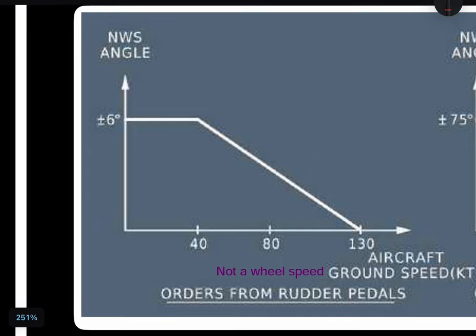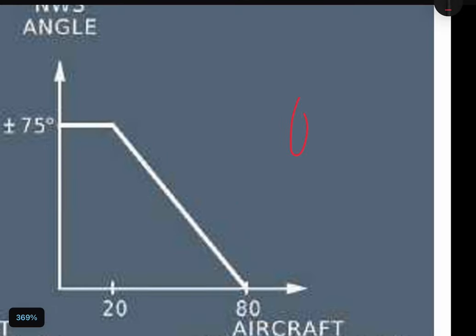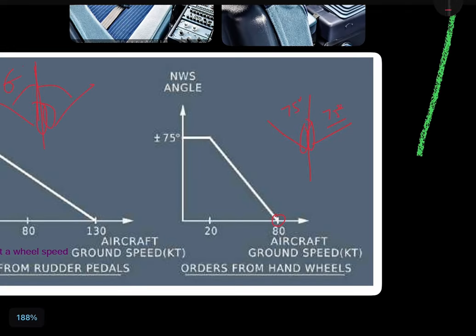With the rudder pedals, the nose wheel steering can be deflected 6 degrees either side. However, as the speed increases from 40 to 130 knots, the deflection angle reduces progressively, reaching zero at 130 knots — there will be no deflection from the rudder pedals above that speed. With the hand wheels, you can deflect the nose wheel left or right up to 75 degrees each side. This 75-degree deflection is available up to 20 knots; after 20 knots it reduces, reaching zero deflection at 80 knots.